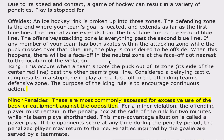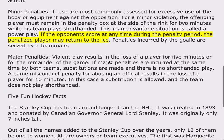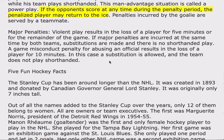Minor penalties are most commonly assessed for excessive use of the body or equipment against the opposition. For a minor violation, the offending player must remain in the penalty box at the side of the rink for two minutes while his team plays short-handed. This man advantage situation is called a power play. If the opponent scores at any time during the penalty period, the penalized player may return to the ice. Penalties incurred by the goalie are served by a teammate.